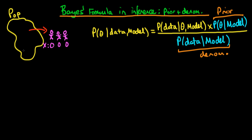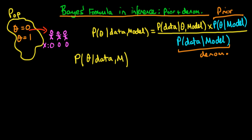Just to refresh your memory, the example here is that we encounter three individuals who have come from a tribe within the Amazon rainforest. Each of these individuals is uninfected for a particular disease, and we want to know whether they come from a population which is uninfected, in which case theta is equal to zero, or an infected population, in which case theta is equal to one. In the last video, we actually formulated the likelihood, which is the first part of the numerator — the probability of the data given theta and our model choice M.